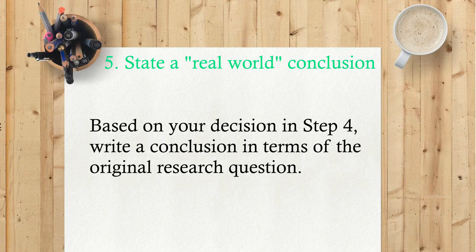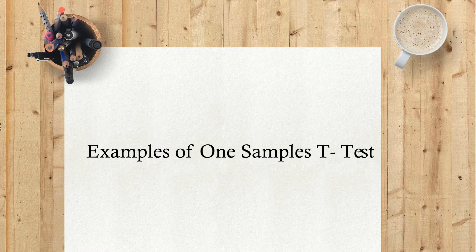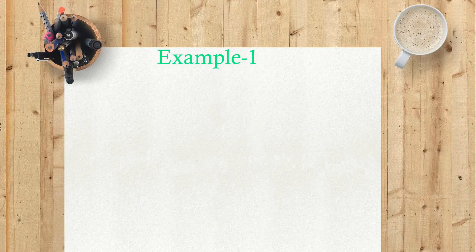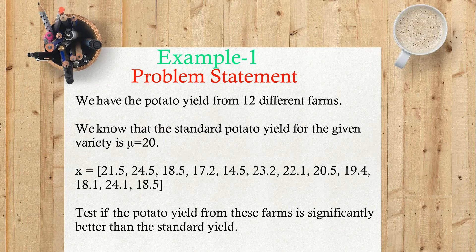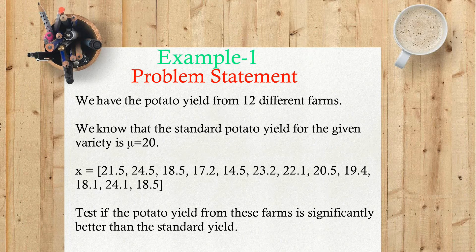Examples of one sample t-test. Example one problem statement: We have the potato yield from 12 different farms. We know that the standard potato yield for the given variety is μ equals 20. x equals 21.5, 24.5, 18.5, 17.2, 14.5, 23.2, 22.1, 20.5, 19.4, 18.1, 24.1, 18.5. Test if the potato yield from these farms is significantly better than the standard yield.